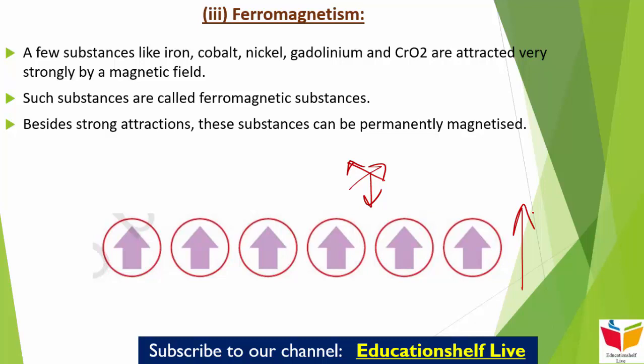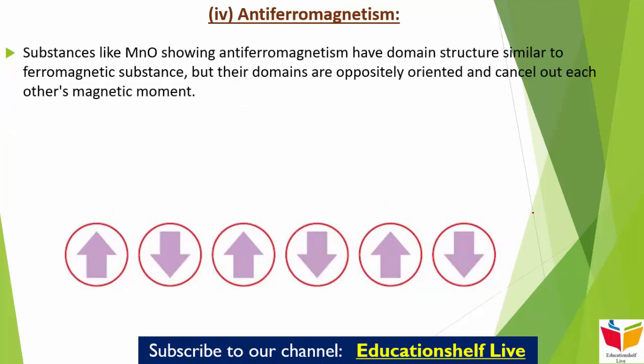Next category है anti-ferromagnetism। कुछ substances होते हैं हमारे जैसे manganese oxide (MnO), जिनमें anti-ferromagnetism की property होती है। इसका domain structure तो ferromagnetic substance की तरह होता है, लेकिन इसके जो domains हैं वो opposite तरीके से oriented रहते हैं और एक दूसरे को cancel out कर देते हैं, इसलिए हम इसे anti-ferromagnetism बोलते हैं।